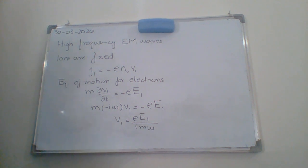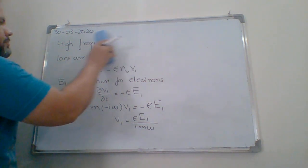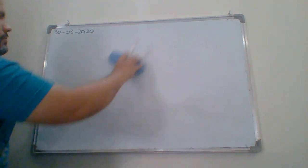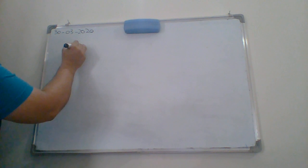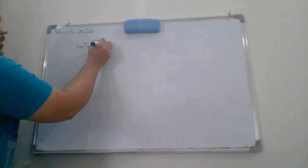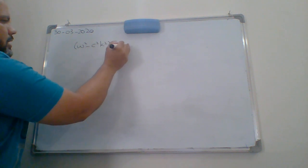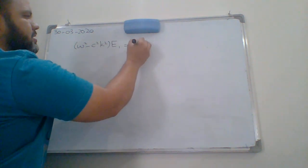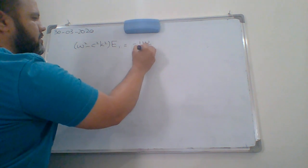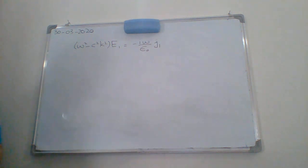Now, I am going to substitute it with the equation that we have derived for the electromagnetic wave in plasma. I am going to erase that one. We have omega squared minus C squared K squared E1 equals minus iota omega by epsilon naught J1.